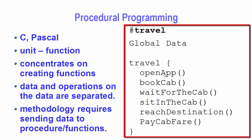This is a pseudocode I have written. First, the passenger will open the app to book a cab, then book the cab, wait for it, sit in the cab once it arrives, reach the destination, and finally pay the fare. This pseudocode represents that algorithm, which we then translate into actual code in a procedural programming language.